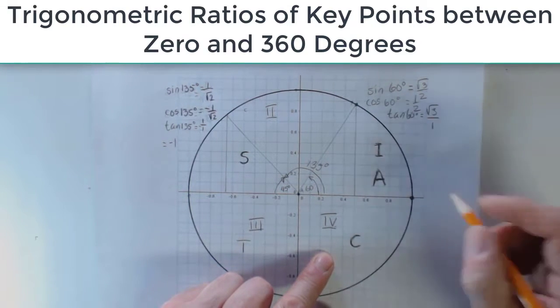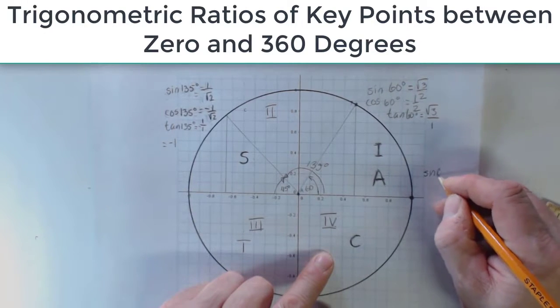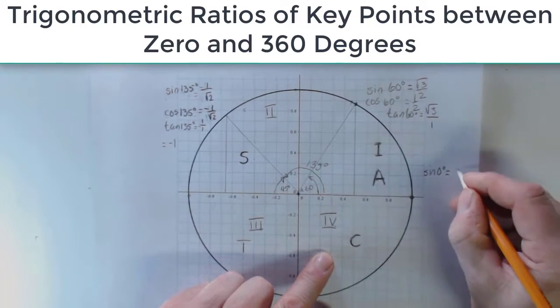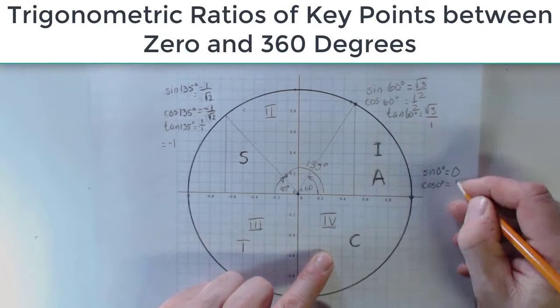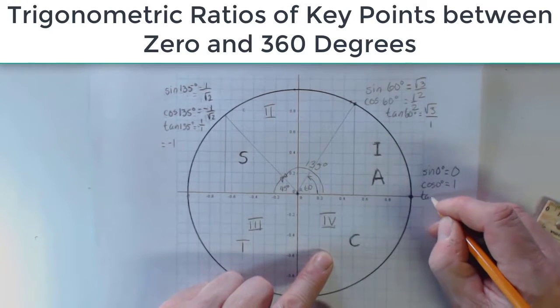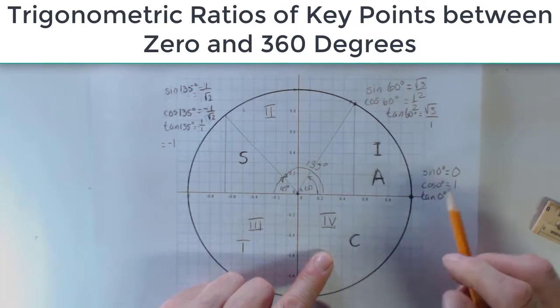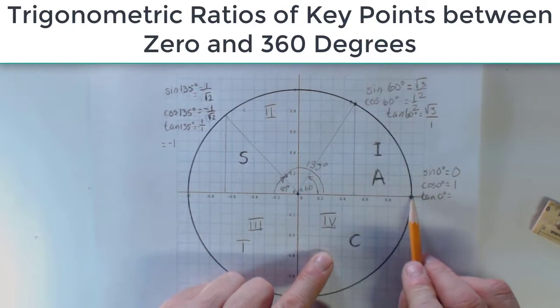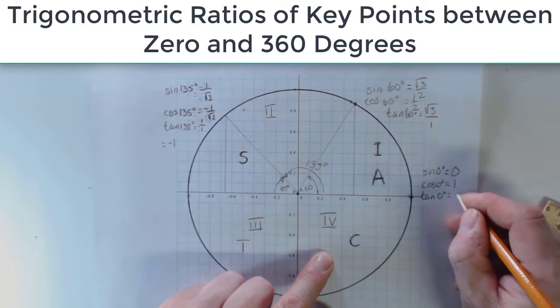This isn't a triangle, but I can still use the same sort of reasoning. The sine of zero degrees is zero. The y-coordinate is zero. The cosine of zero degrees is one. The tangent of zero degrees, if I thought of this as a little bitty triangle with an opposite side of zero and an adjacent side length of one, that would be zero over one. The tangent is also zero.